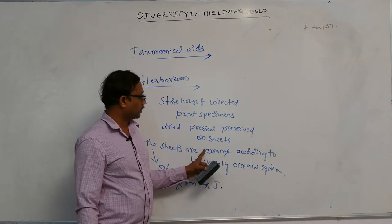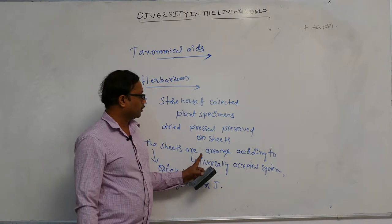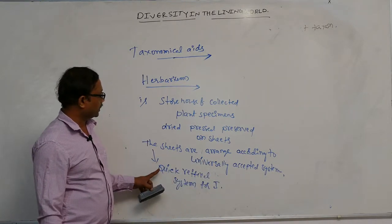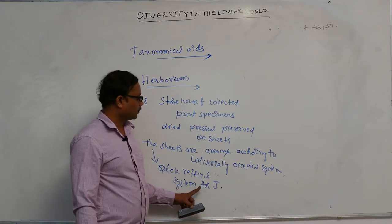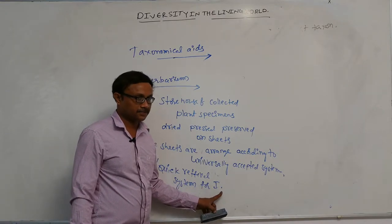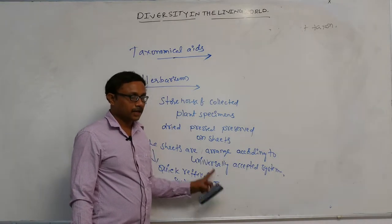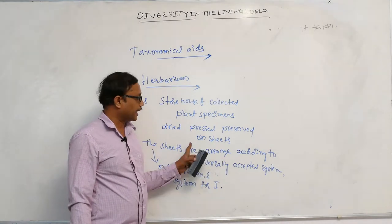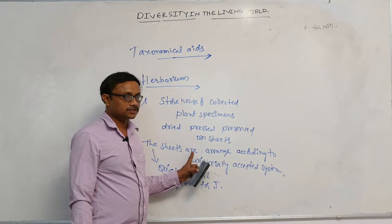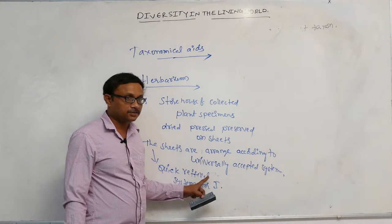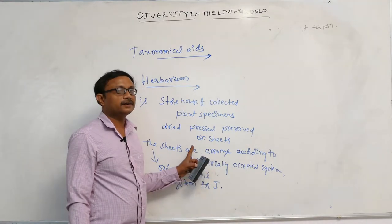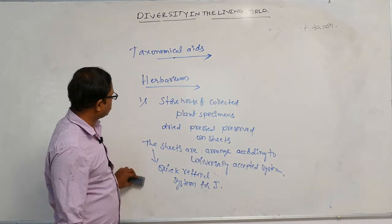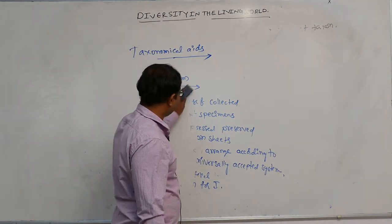These sheets are arranged according to a universally accepted system of classification. They also act as a quick referral system for identification of the plants. Herbarium sheets along with their descriptions act as a storehouse or repository house for future purpose. These herbarium sheets carry a label.